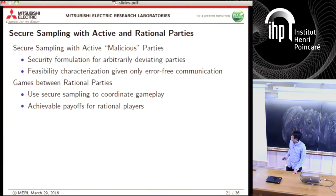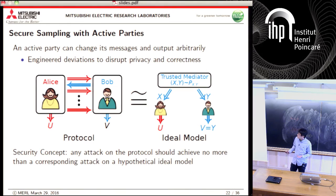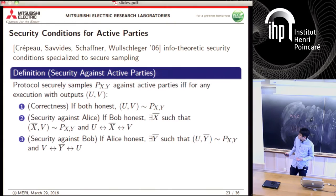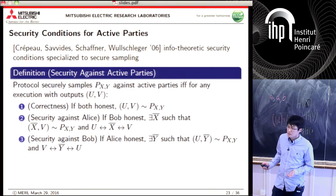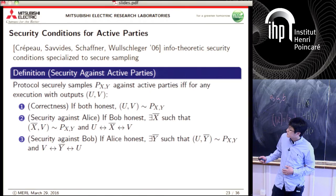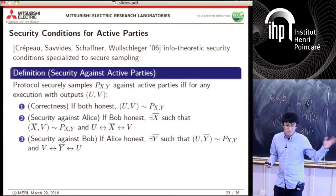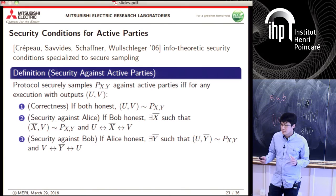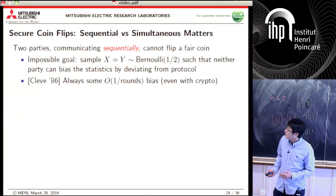For secure sampling with malicious (active security) parties, this can be formulated via the real-versus-ideal paradigm. There are papers showing that these information-theoretic mutual-information conditions are equivalent to real-versus-ideal security. This covers standalone active security — not universally composable security.